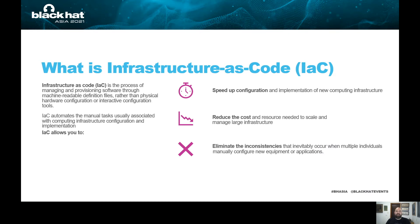So what is infrastructure as code? Infrastructure as code is the process of managing and provisioning software through machine-readable definition files. We're no longer using physical hardware configurations or interactive configuration tools. Instead, we have an automated way of creating configuration files, which makes everything much quicker and more scalable. It reduces cost, reduces the resources needed to manage large infrastructures, everything becomes more elastic, with no more inconsistencies. You create these configuration files once and deploy or provision them as many times as you want.